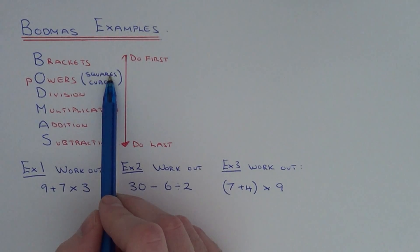These are things like squares and cubes, so like 3 squared which is 9, 5 cubed, 125.